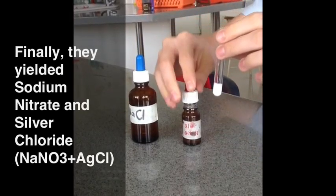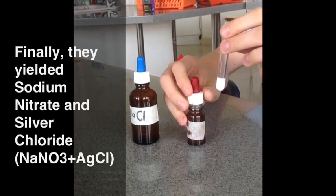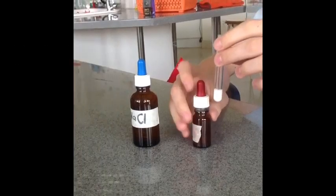Finally, they yielded sodium nitrate and silver chloride, also known as NaNO3 plus AgCl.